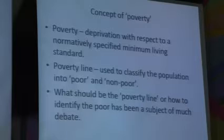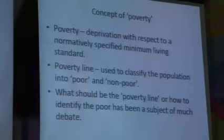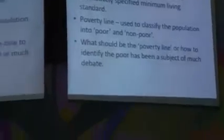Why use the term normatively specified? Because howsoever scientific or objective you try to be, there is always going to be certain subjectivity involved. Many of you might have been following the news over the last year — there has been a lot of controversy about how the poverty line should be defined. In the Indian context, it is a tragedy that most of the debates on poverty tend to revolve around what should be the poverty line and how poverty should be measured, rather than trying to understand the constraints faced by people to come out of poverty and what interventions are required.